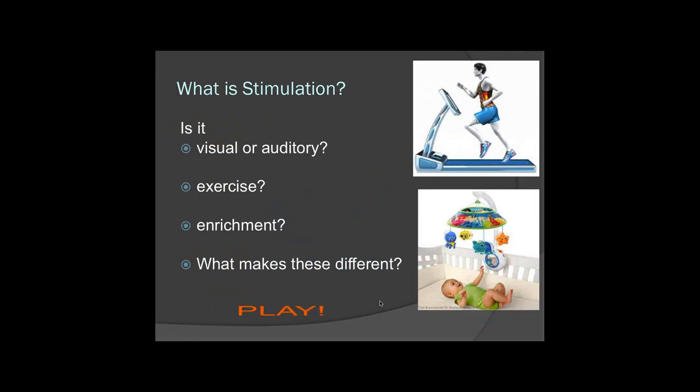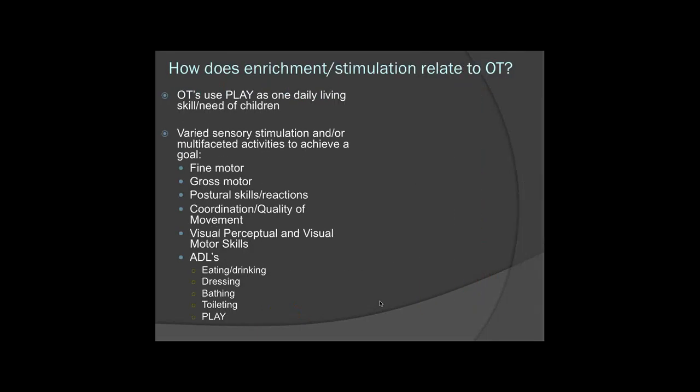Visual stimulation, auditory stimulation, exercise, and enrichment can all come together in play. Play provides a child with all of these ideas — exercise maybe through running or jumping over things, enrichment from the stimulation they're getting from the activity, and then the visual and auditory feedback they're receiving. In OT, we can stimulate play in multiple ways — to improve fine motor and gross motor skills, to improve postural reactions, coordination, and quality of movement, to improve visual perceptual difficulties, as well as all activities of daily living such as eating, drinking, bathing, and of course play.